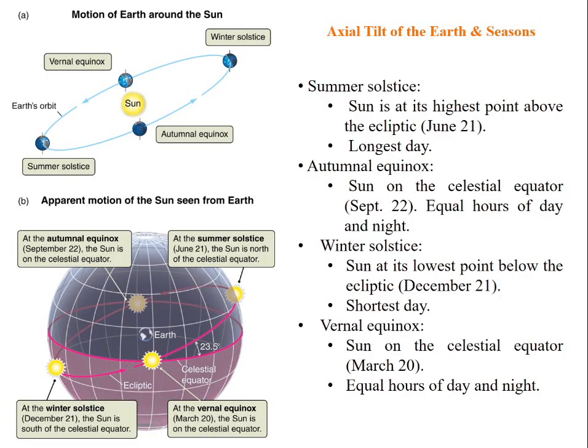Let us learn some vocabulary related to seasons. Summer solstice: the sun is at the highest point above the ecliptic, June 21st, considered the longest day with respect to the northern hemisphere.